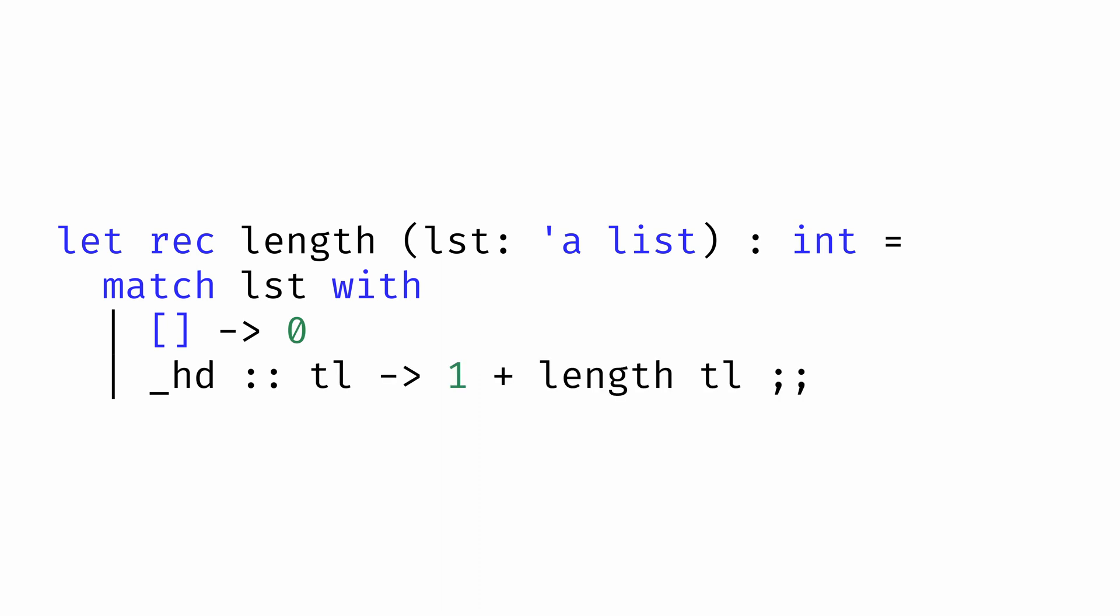The way we've written this function captures how we define the length of a list. The length of an empty list is defined to be 0. The length of a non-empty list with a head and a tail is defined to be 1 more than the length of the tail. In essence, we're approaching this problem by thinking about what the length is.